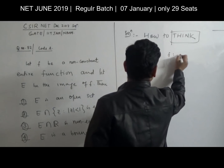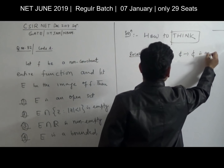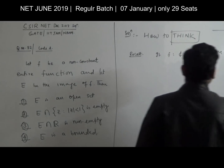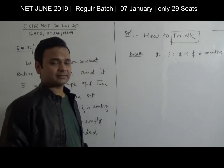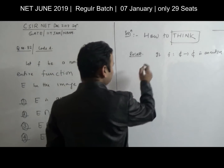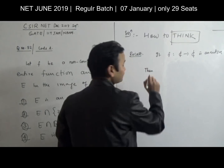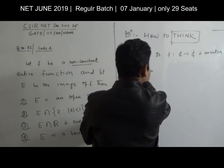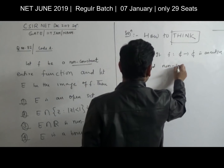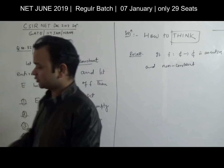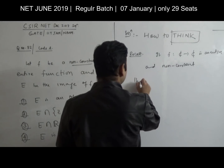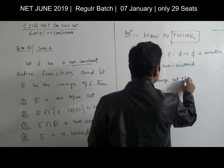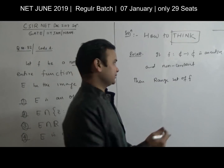If F is an entire function from C to C, first of all you should know what is meant by an entire function — that's the necessary part. If F is entire and non-constant, then the range set of F is dense in the complex plane.